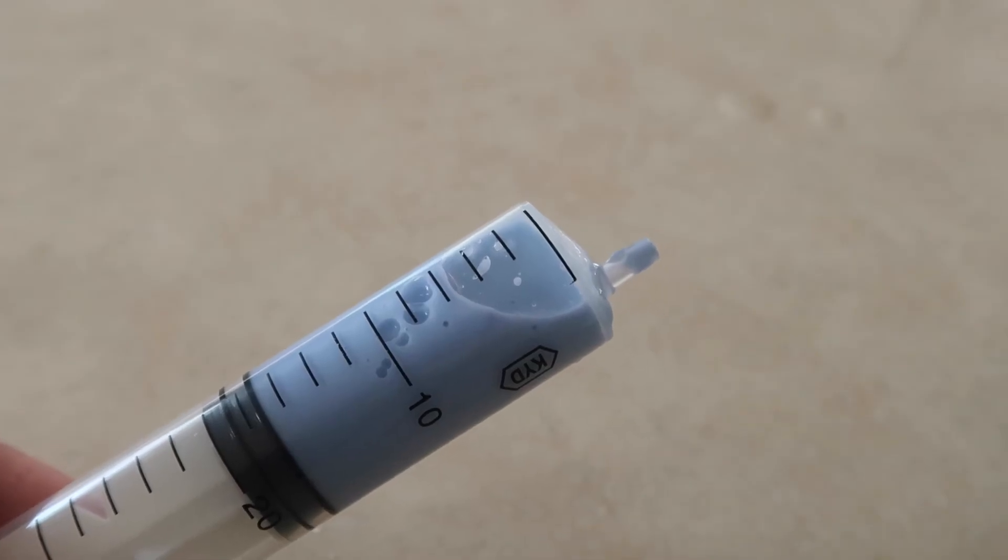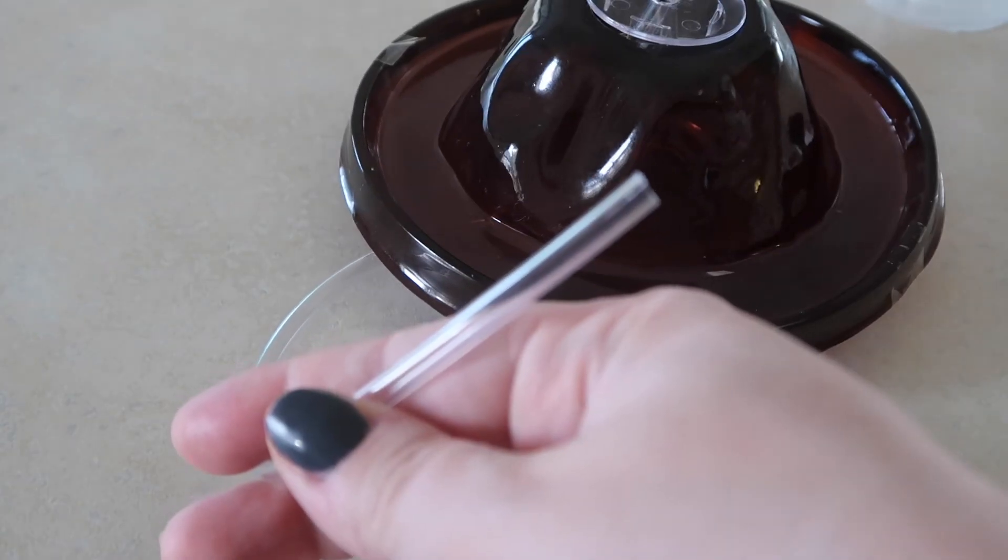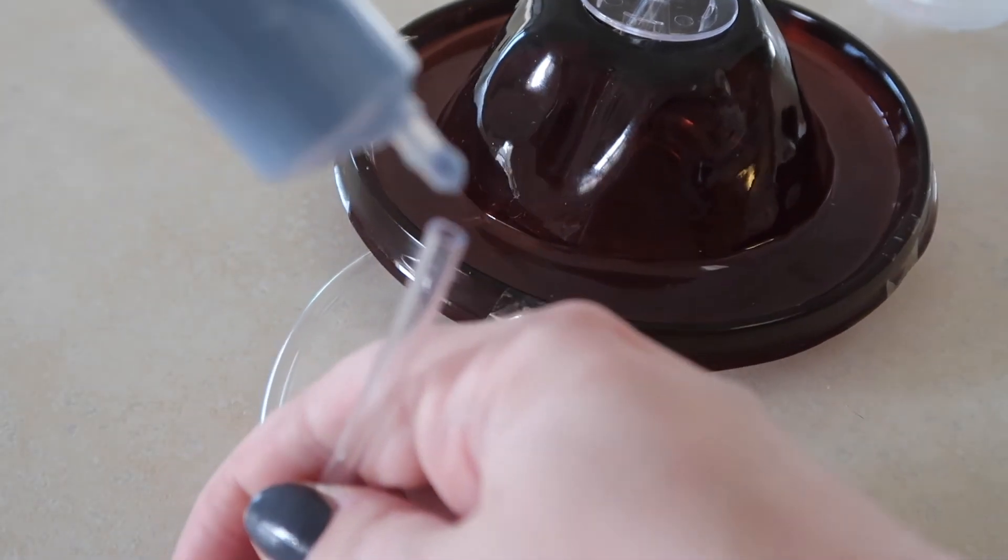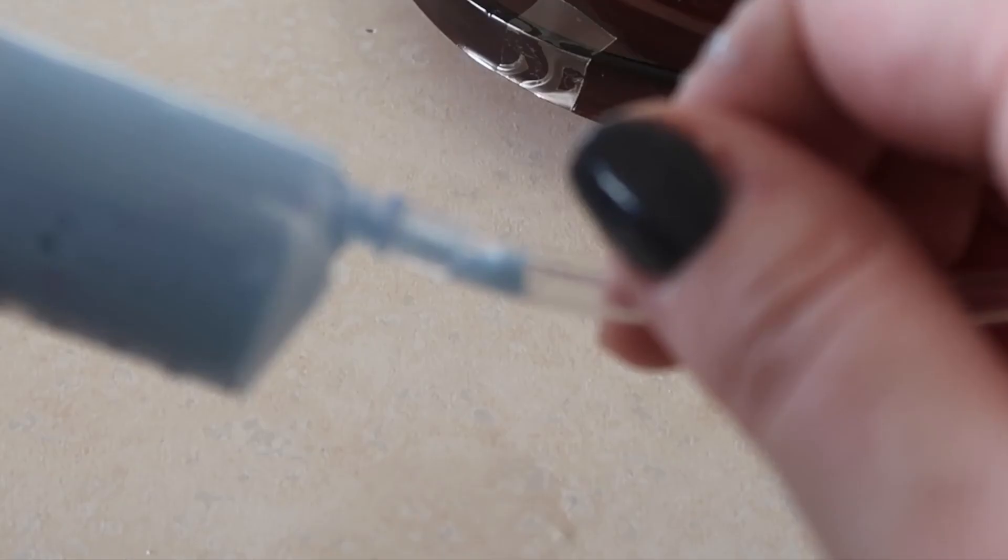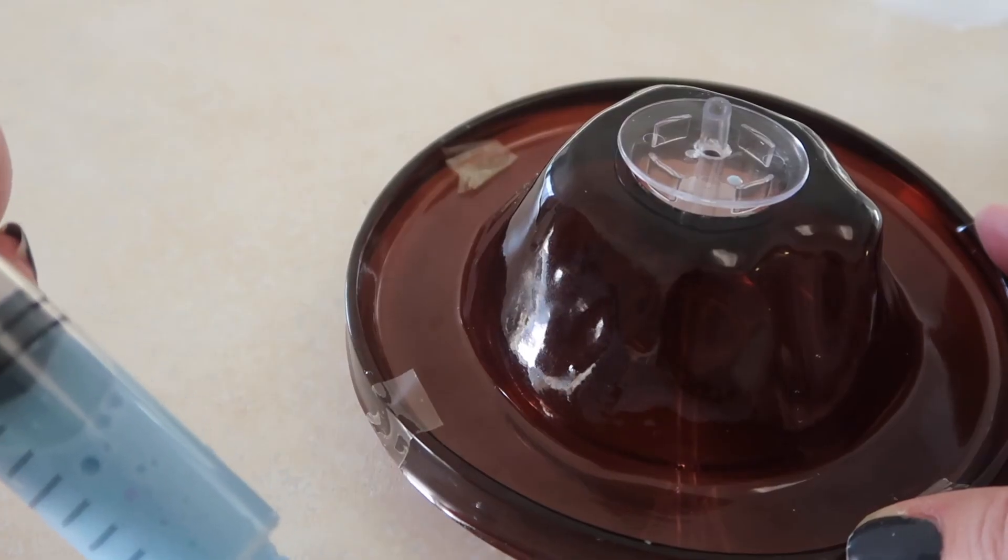Next, insert the end of the syringe into the tube. So, we're going to take this end of the tube and our syringe and put them together. Next, push the plunger and watch your volcano erupt.